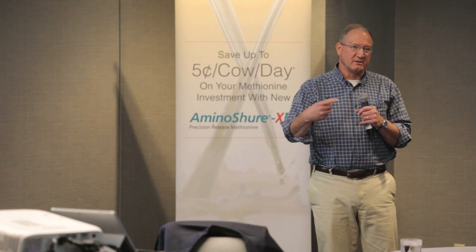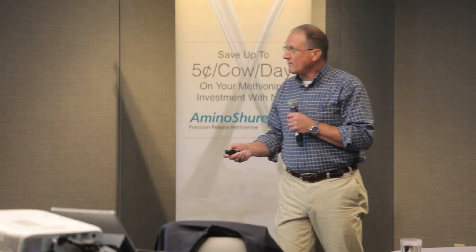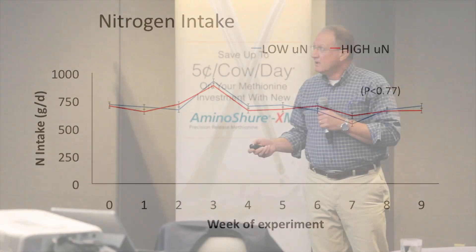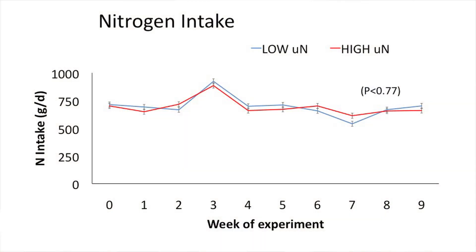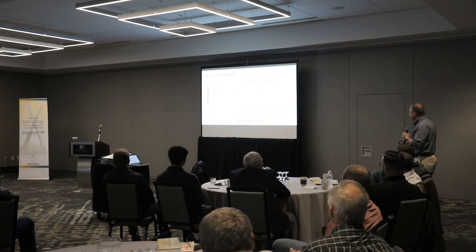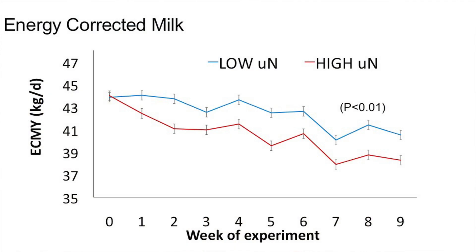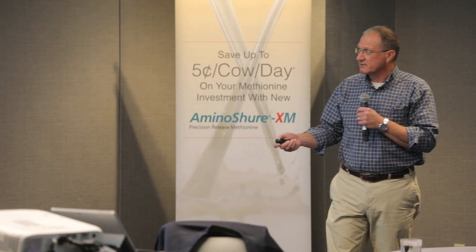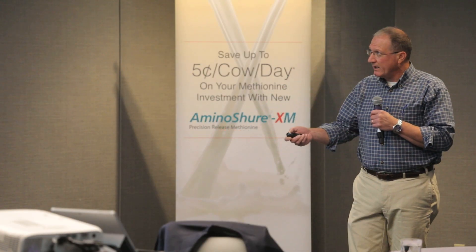Here's where the subtleties become really important. If you're going to do these kinds of studies, you want to make sure your nitrogen intakes are similar — and they were. And you can see what happens when nobody does the dry matters correctly for a week, but at least they went the same direction. The cows immediately responded: with the lower-digestibility blood meal, they dropped in milk and energy-corrected milk.